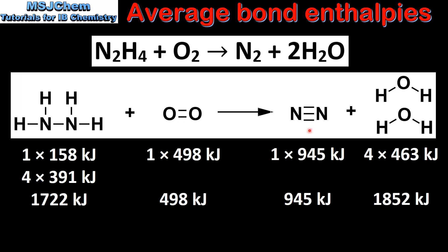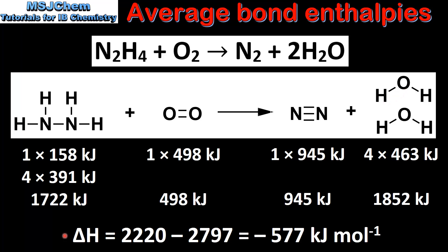In the products we have 1 nitrogen-to-nitrogen triple bond and 4 oxygen-to-hydrogen single bonds. To calculate the enthalpy change, we find the total bond enthalpies for the reactants and subtract the total bond enthalpies for the products. This gives us an enthalpy change of negative 577 kJ per mole.